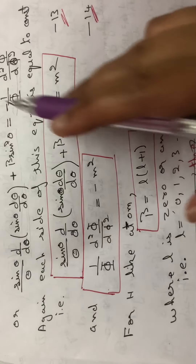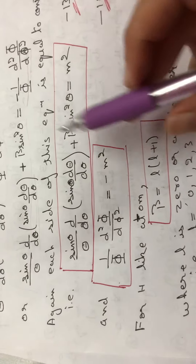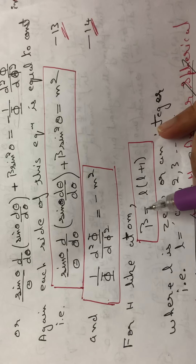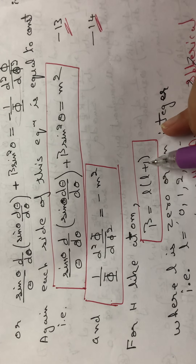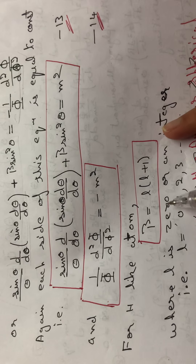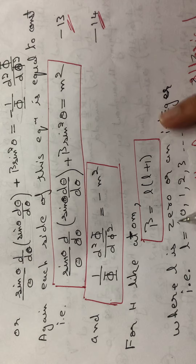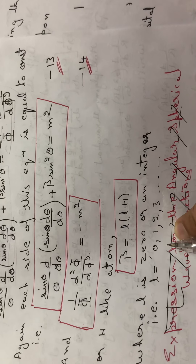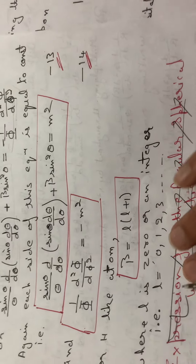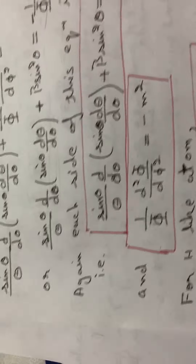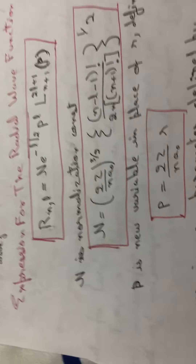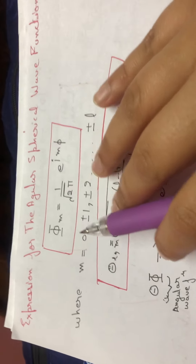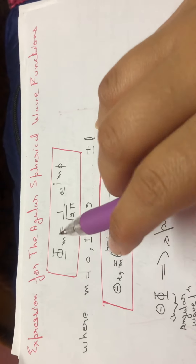For the hydrogen-like particle, solving all these equations gives the result that β must equal l(l+1), where l has values 0, 1, 2, … (any non-negative integer). From this we now have the expression for the angular spherical wave function.